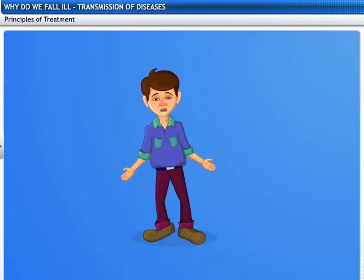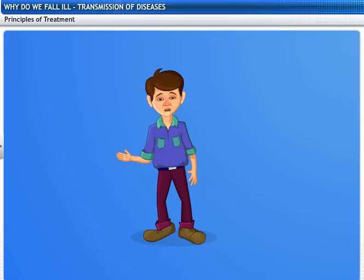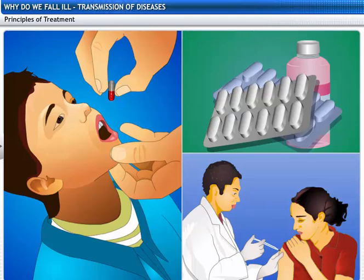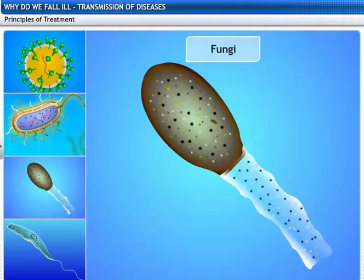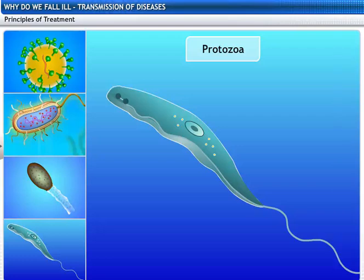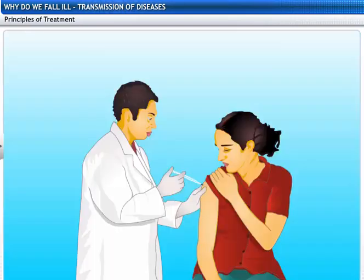Is symptom-based treatment enough to get rid of an infectious disease? Not completely. We have to eliminate the causative agents, namely microbes from our body. The different types of microbes — like viruses, bacteria, fungi, or protozoa — have a particular biochemical life process, which is different from other groups. So we have to take medicine according to the type of microbe by which we are affected.